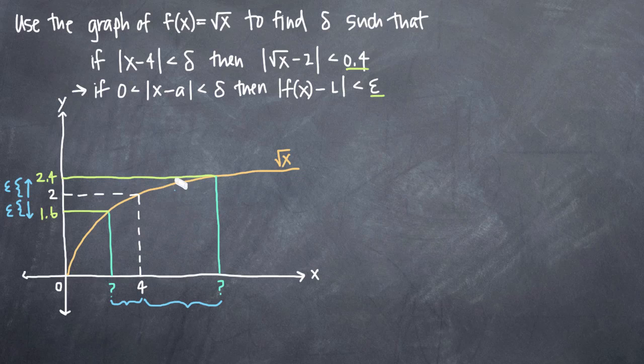Well, the interesting thing about this problem is that we can only define one value for delta. We can see that the distance from this line to 4 and the distance from this line to 4 are very different. And we can only define one value for delta.